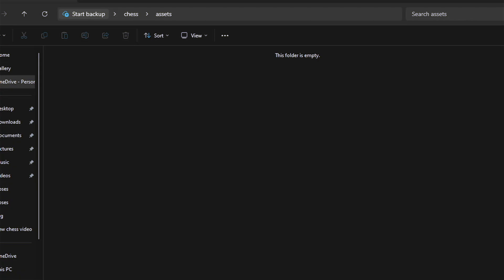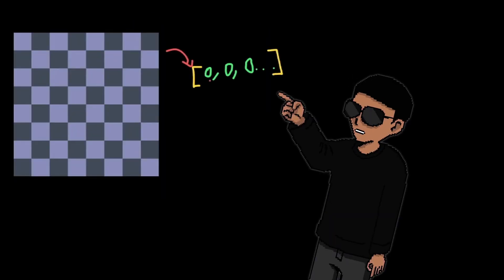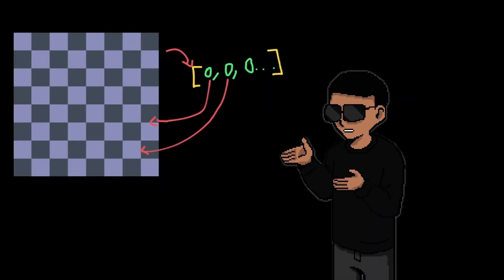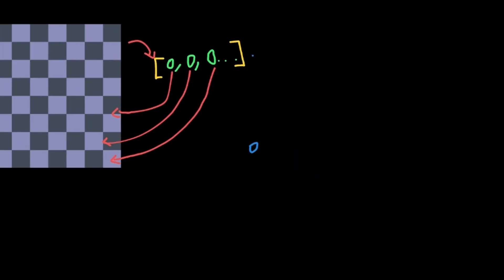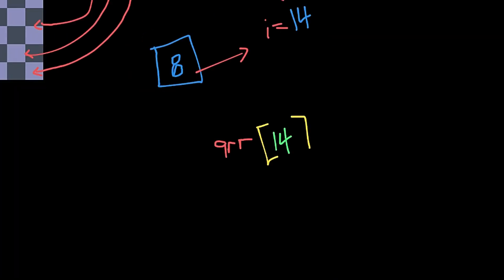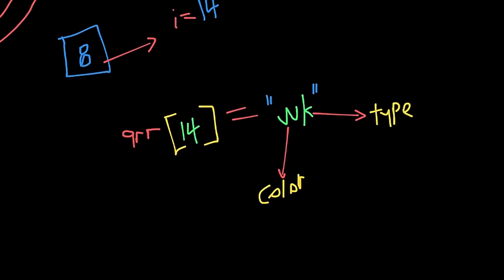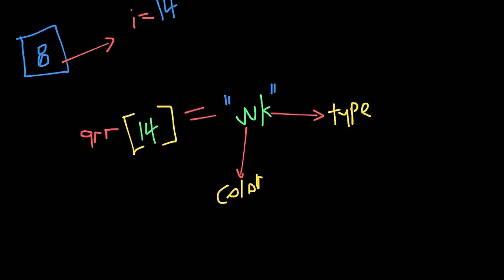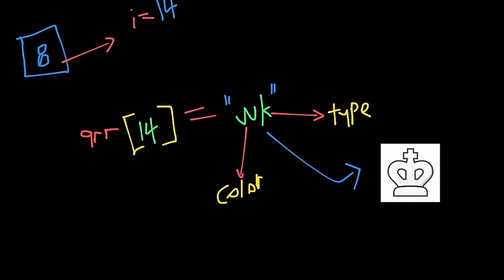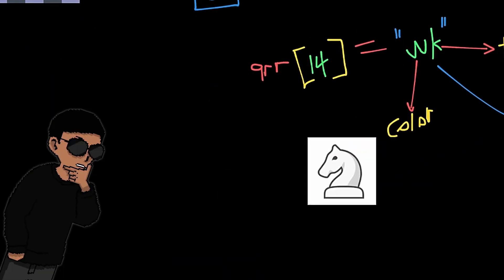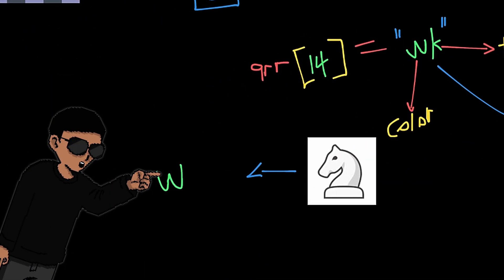Now we need pieces. To draw the pieces, we need to represent our board in an array of zeros, with each index representing a square on the board. To draw a piece on a square, we need to find the index of that square in our array and set the value to a two-character string signifying the exact piece. The first character being the color, and the second being what type the piece is. This, for example, is a white king. Since the knight also starts with a K, we're going to have to use an N to indicate it.